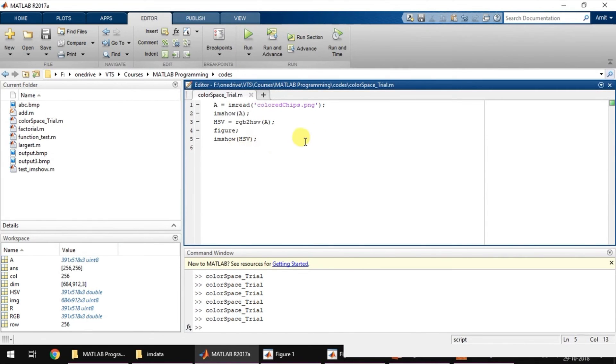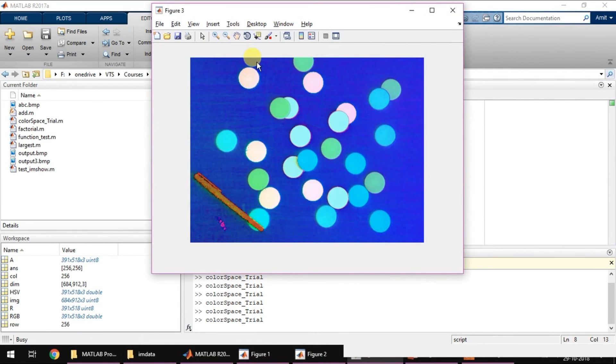At this point we can do the processing whatever we need, if we need at all, and then we can convert it back using this function. I will again create another figure and imshow RGB. That will generate three different windows.